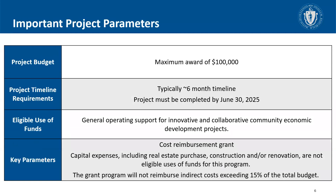In terms of project parameters, the project budget has a maximum award of $100,000, and you can request anywhere from $0 to $100,000. The project timeline is about six months. Grant awards are generally made, fully contracted, and projects usually begin at the start of the new calendar year. The project must be completed by June 30th, 2025, giving folks about six months to complete their project. Projects can operate outside that timeline, but only expenses incurred during that roughly six-month window are reimbursable.